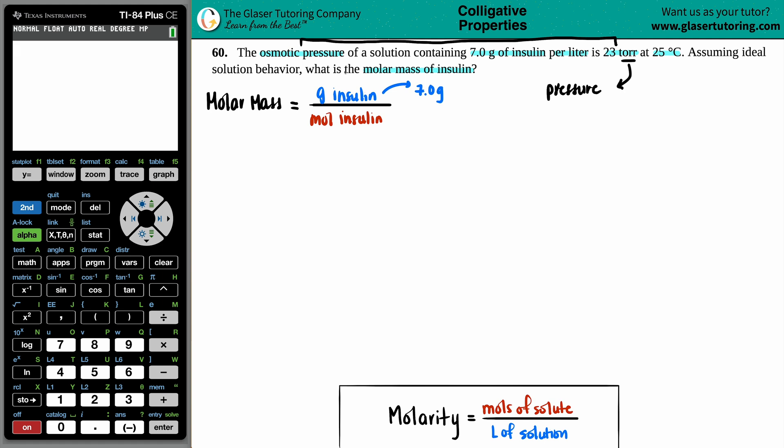Do we know the moles of the insulin? That they didn't tell us. They didn't give us a mole value. So I'm going to have to find this out a different way. But they gave us a very, very big hint here. We are using specifically an osmotic pressure. There's only one formula for specifically an osmotic pressure. And that is this formula right here.